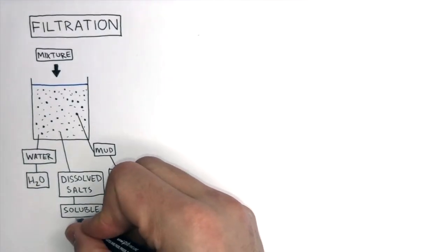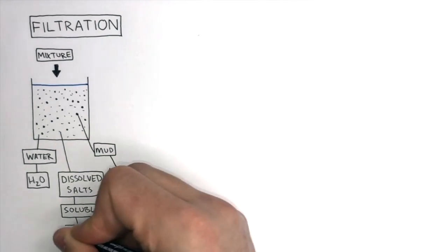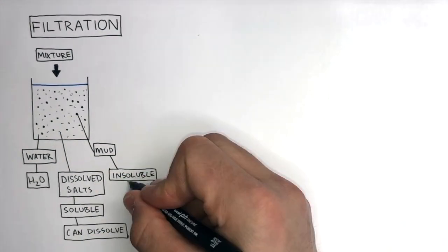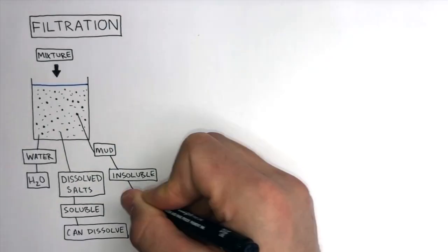So if a substance is soluble, that substance can dissolve in a particular solvent. In this case the solvent is water, whereas mud is insoluble because it cannot dissolve in water.